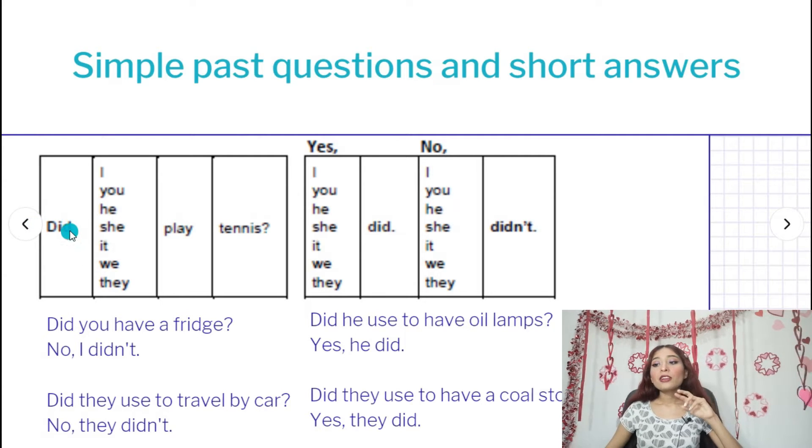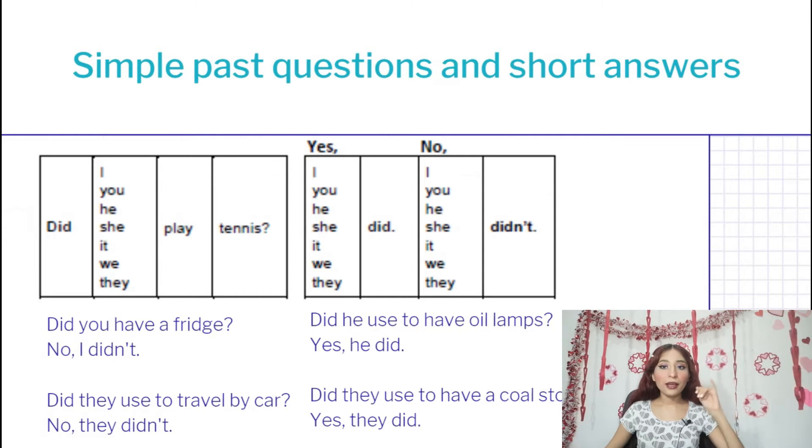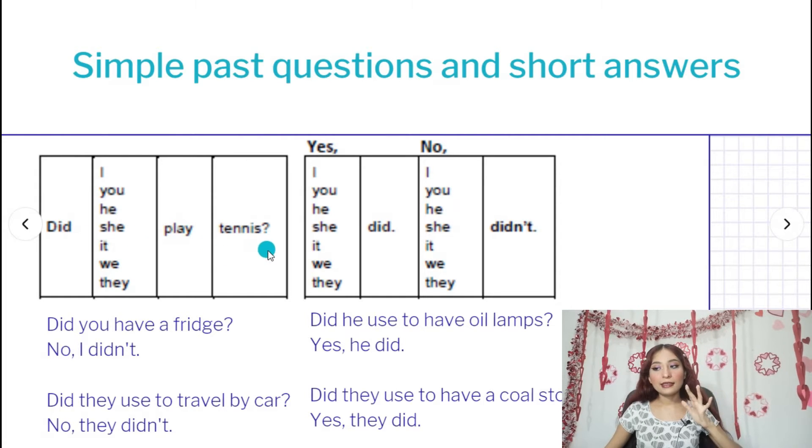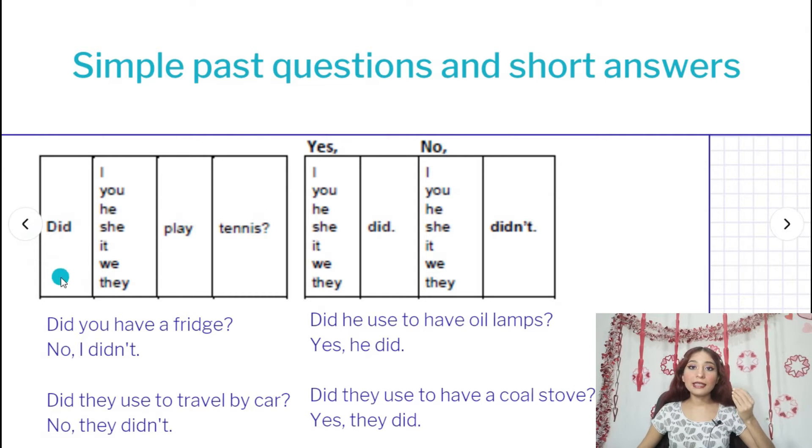So in one sentence or one question or whatever it is, you cannot use two verbs in past. Okay? In this kind of sentence. A lo mejor hay otro tipo, pero en este tipo de preguntas de oraciones, nunca vamos a usar dos verbos en pasado juntos. For example, because this is an auxiliary verb and this is the main verb.